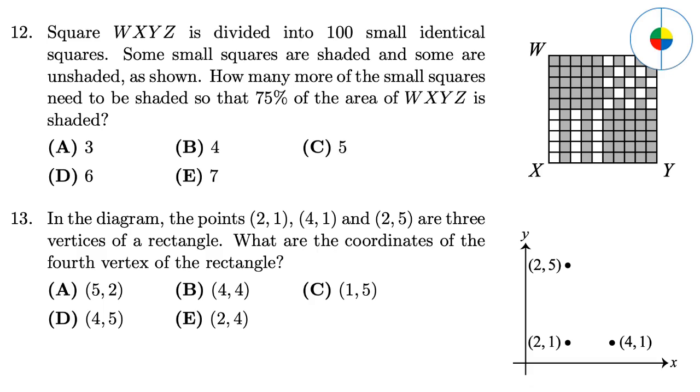Question 12: This is testing your counting skill. There are 72 shaded areas, but you need 75, so the answer is 3. Question 13: This is a simple reasoning. The x-coordinate is the same as 4, 1, and the y-coordinate is the same as 2, 5. So the answer is 4, 5.